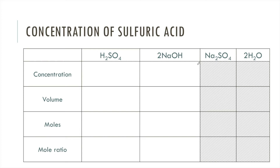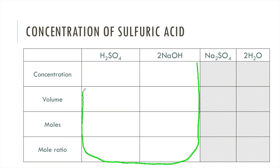We start with the known concentration of sodium hydroxide. We know the volume we put in the conical flask, then we work out the number of moles. We then apply the mole ratio and work out the moles of sulfuric acid, like following a curve shape across the table. We know the volume from the titration and finally calculate the concentration of sulfuric acid. Tables like this are really good because they make the order of working very clear.